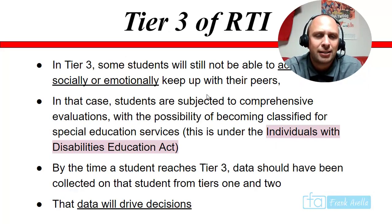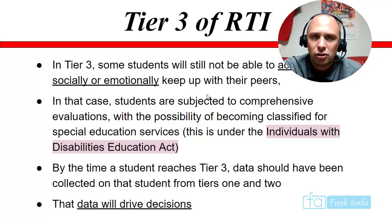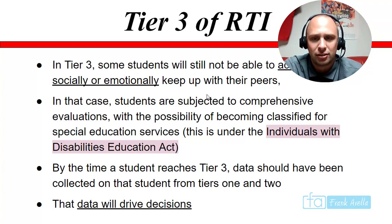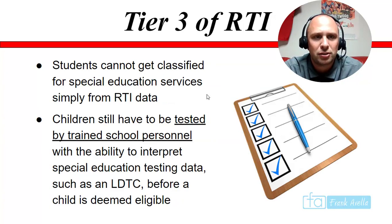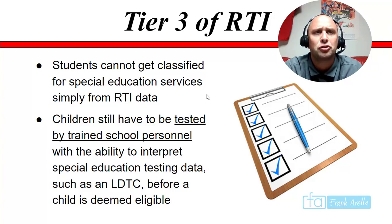Some students will still not be able to academically, socially, or emotionally keep up with their peers. In that case, students are subjected to comprehensive evaluations with the possibility of becoming classified for special education services under IDEA, the Individuals with Disabilities Education Act. By the time a student reaches tier three, data should have been collected from tiers one and two — data will always drive decisions. However, students cannot be classified for special education simply from RTI data; they still have to be tested by trained school personnel, such as an LDTC, who can administer and interpret special education evaluation assessments.